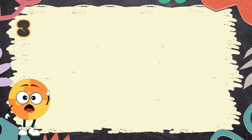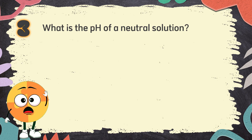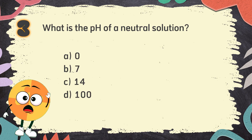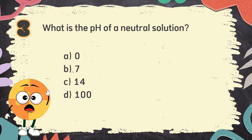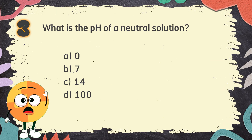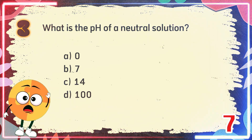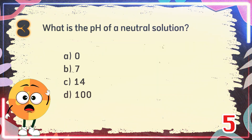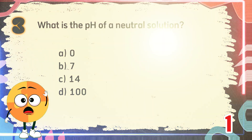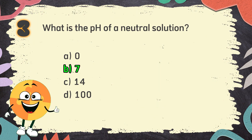Number 3. What is the pH of a neutral solution? The choices are A. Zero, B. Seven, C. Fourteen, D. One hundred. The correct answer is B. Seven.